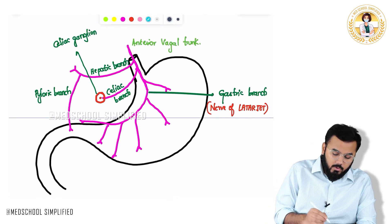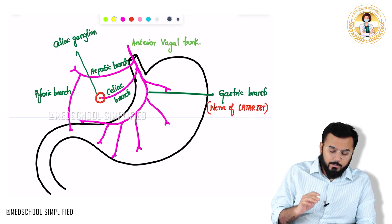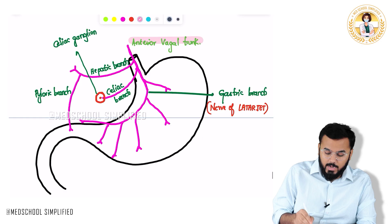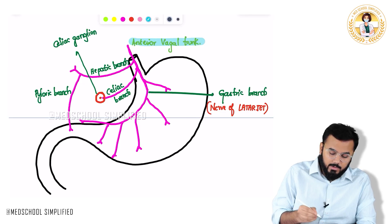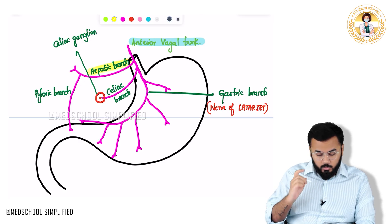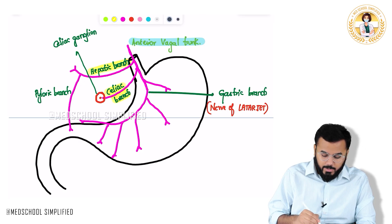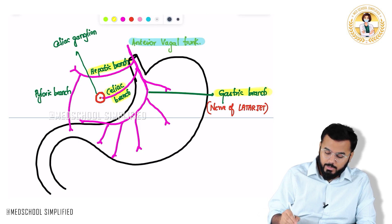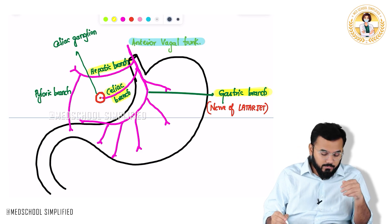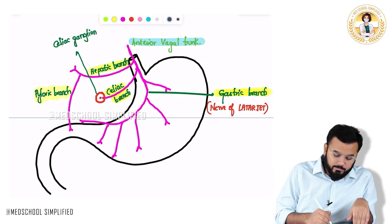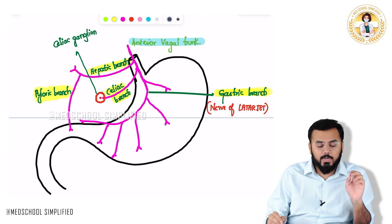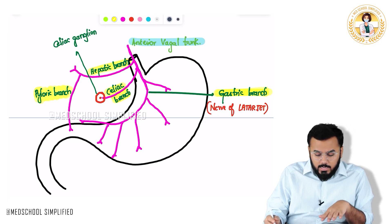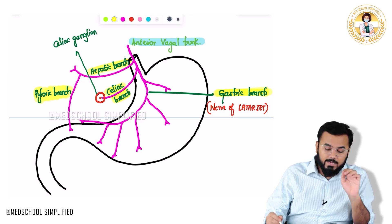To recap the anterior side: the main trunk is the anterior vagal trunk. It gives out a hepatic branch, a celiac branch entering the celiac ganglion, and a gastric branch also known as the nerve of Latarjet. The hepatic branch additionally gives a small branch called the pyloric branch.